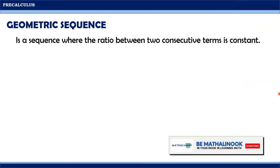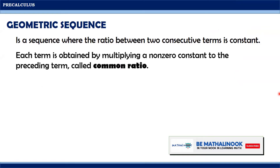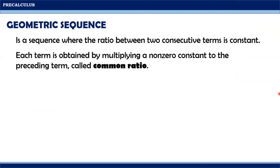A geometric sequence is a sequence where the ratio between two consecutive terms is constant. Each term is obtained by multiplying a non-zero constant to the preceding term, called the common ratio.